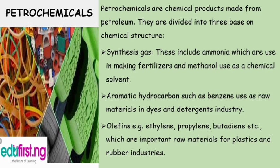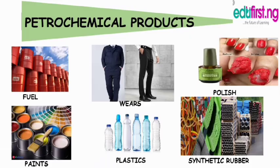Petrochemicals are basically divided into three based on their chemical structure: first, synthesized gas such as ammonia, used in making fertilizers, and methanol, used as a chemical solvent; second, aromatic hydrocarbons such as benzene, used as raw materials in dyes and detergents; and third, olefins such as ethylene, propylene, and butadiene, which are important raw materials for the plastic and rubber industry.